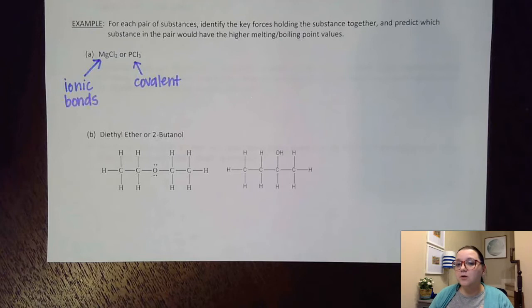Remember, network covalent is when I have carbon in an allotrope, like diamond or graphite, or I might have silicon dioxide, which is glass. So if I have network covalent, metallic, or ionic, then I'm breaking bonds to go from a solid to a liquid to a gas.